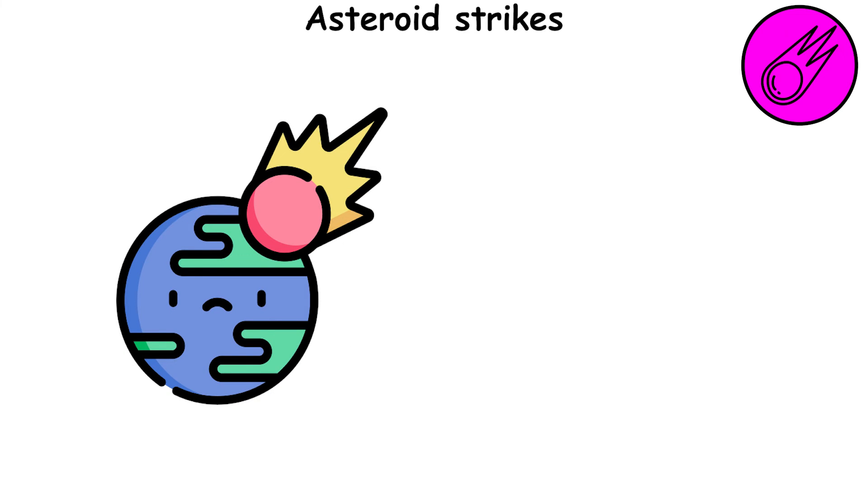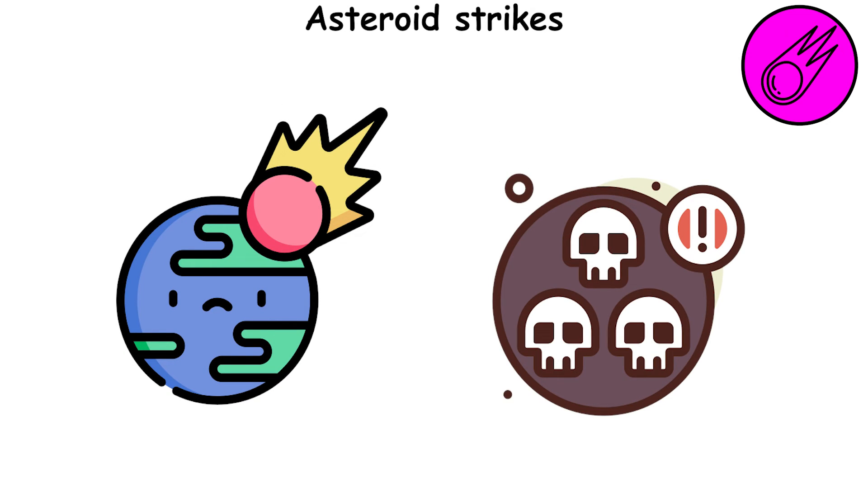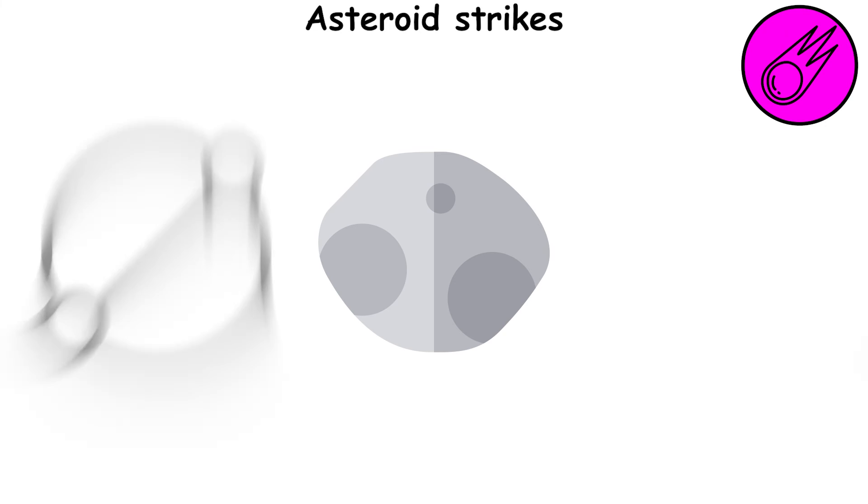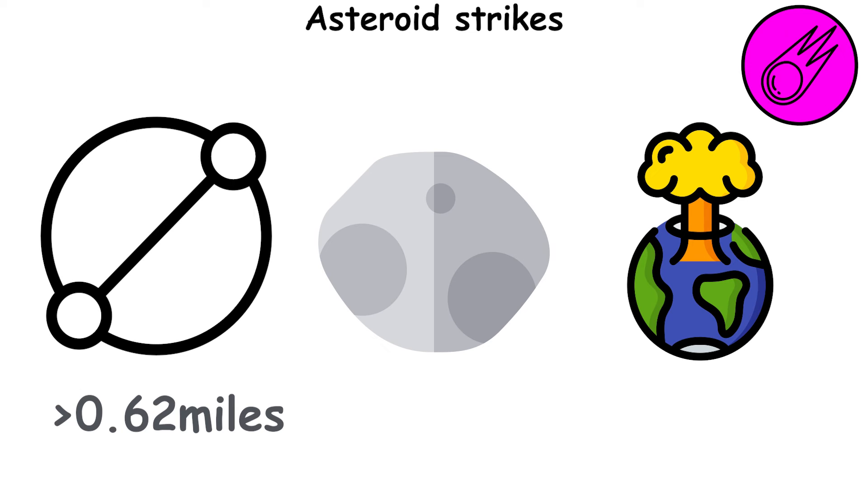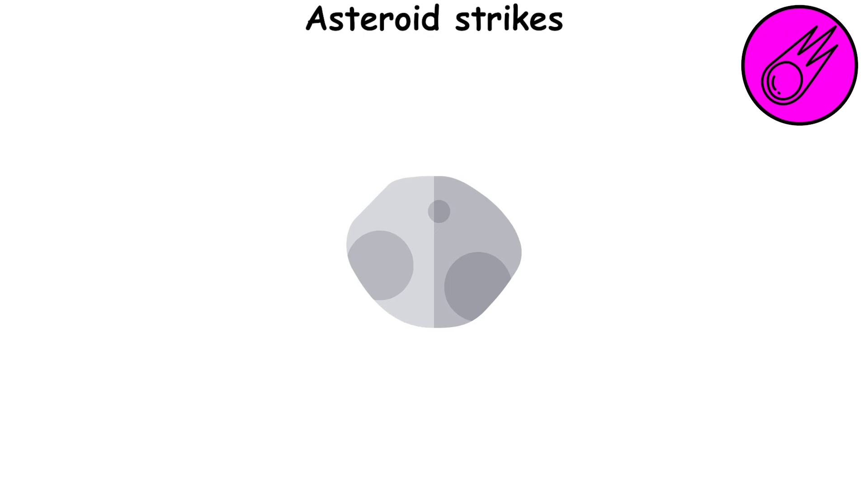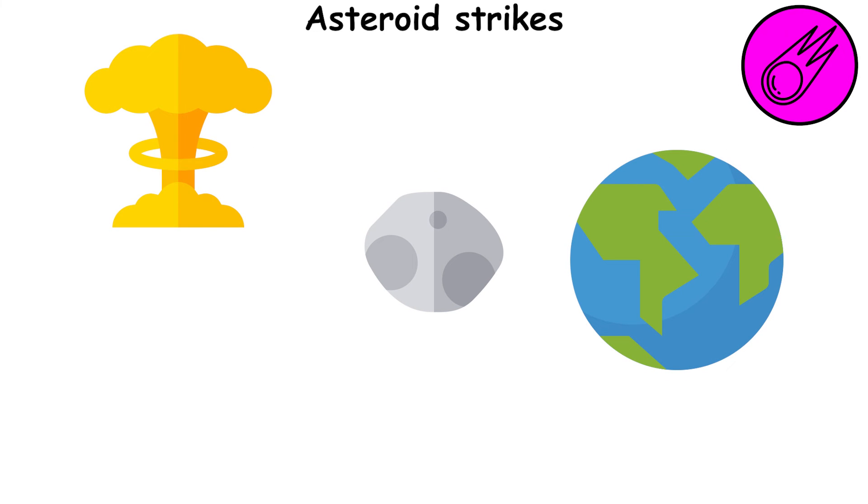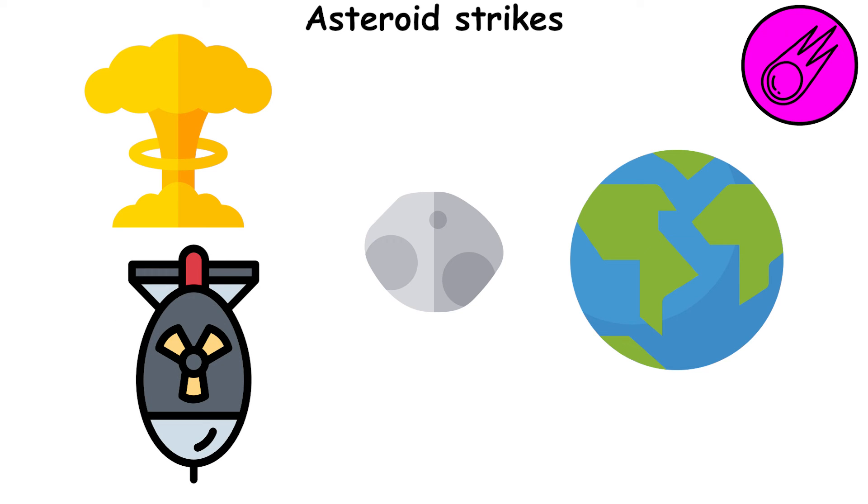According to some theories, it was the largest impact events that caused large-scale extinctions. Big space objects with a diameter of more than about 0.62 miles threaten mankind with a clear global catastrophe in case of collision with the Earth. Comparatively smaller objects also pose a serious threat to Earth, as the shockwave and heating when falling near populated areas can cause significant destruction commensurate with the damage caused by an atomic explosion.